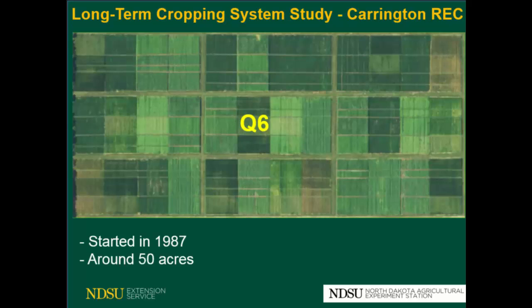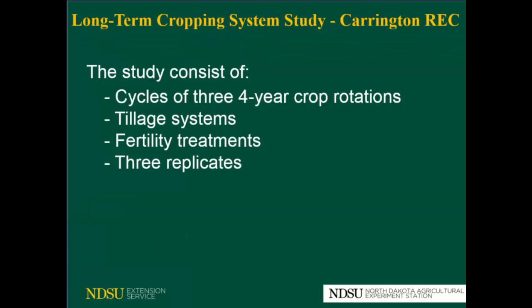The cropping systems project was started in 1987 and takes up around 50 acres in the Research Center. It consists of cycles — different cycles of three different four-year crop rotations — and involves the system, fertility treatment, and three replicates.